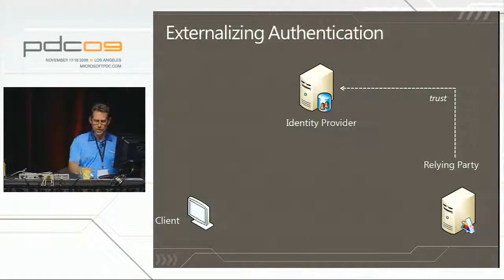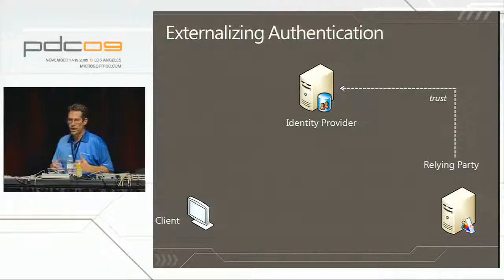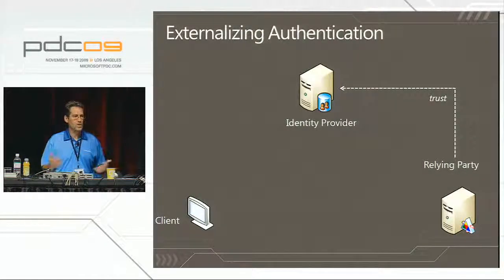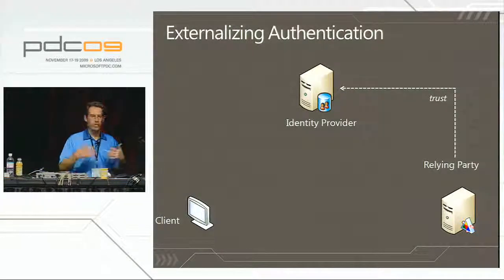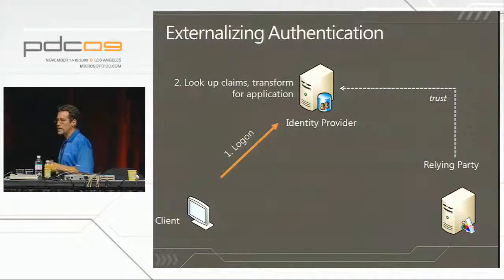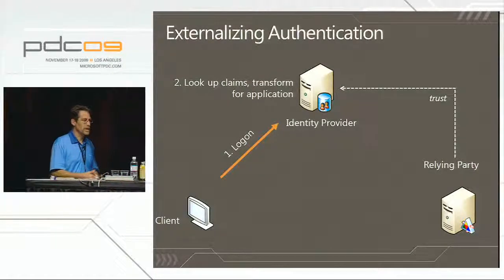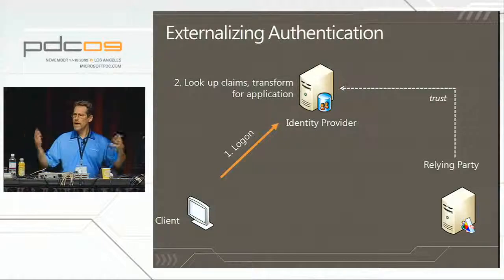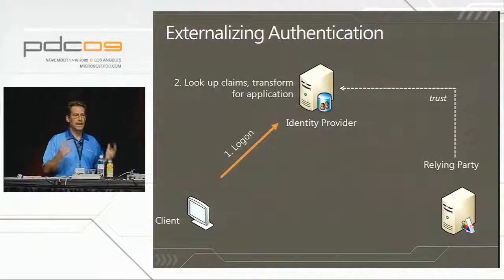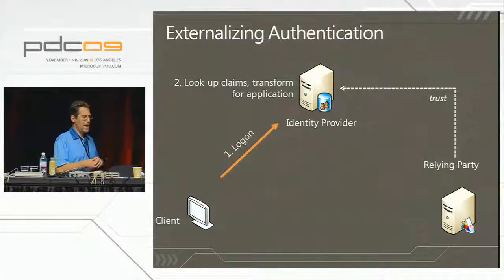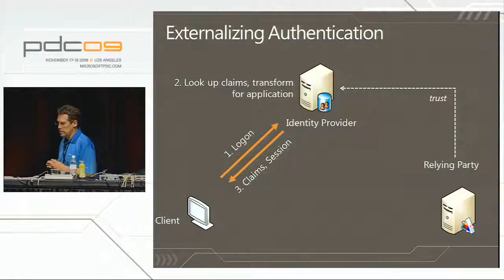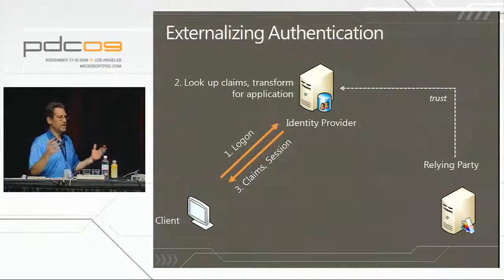In all these systems there's usually a client — in the identity work we do, that client can be a browser. The user logs on to the identity provider, which authenticates with a username/password, X.509 certificate, or Kerberos ticket. Once authenticated, the identity provider collects data about the user, transforms it, and calls all that data 'claims.' Those claims are packaged securely into a security token and sent back.